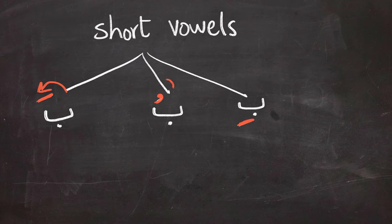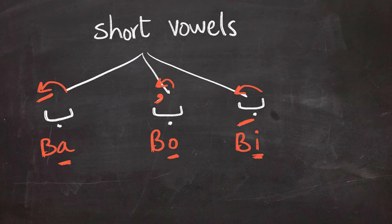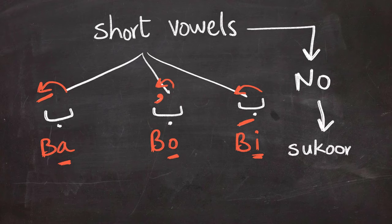So we say ba, boo, bi - after pronouncing the letter. We also learned another symbol which is the symbol of no vowel, which is sukoon, and it is a symbol of a perfect circle or no symbol at all. I'm going to write the short vowel symbols on the top left corner one more time to keep track of them throughout the whole lesson.